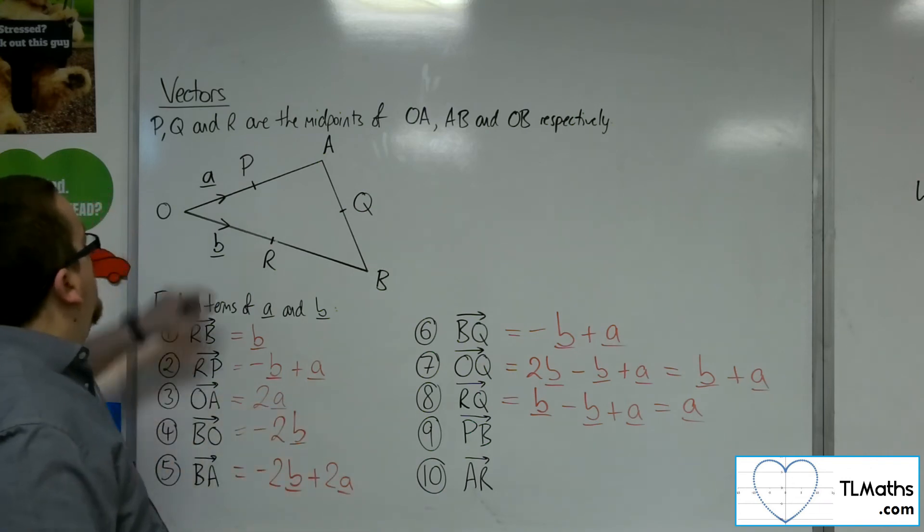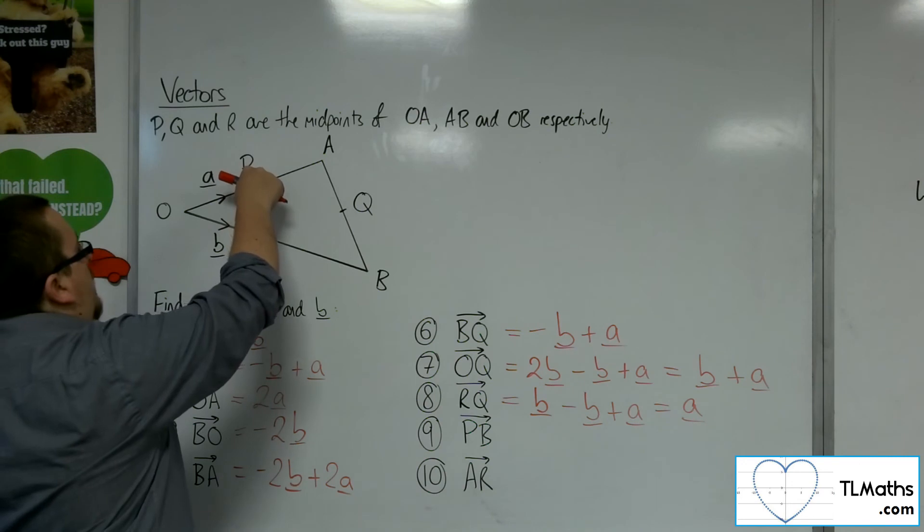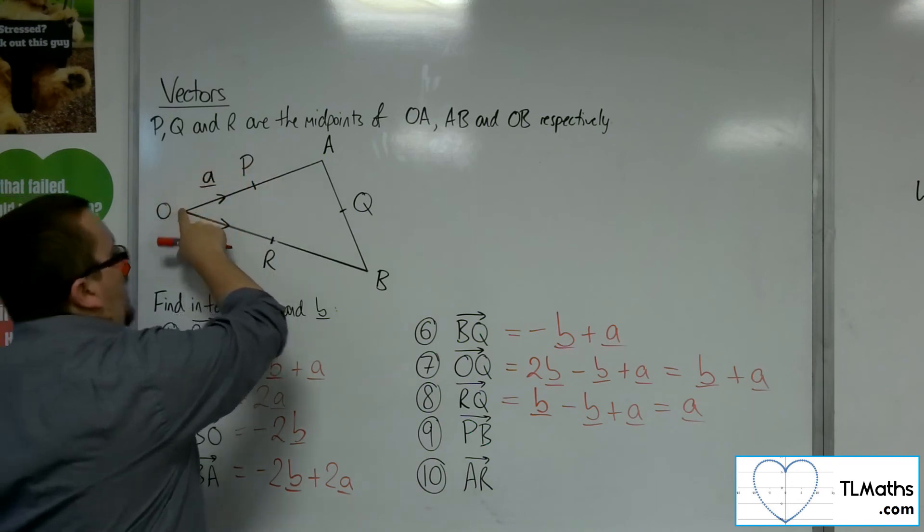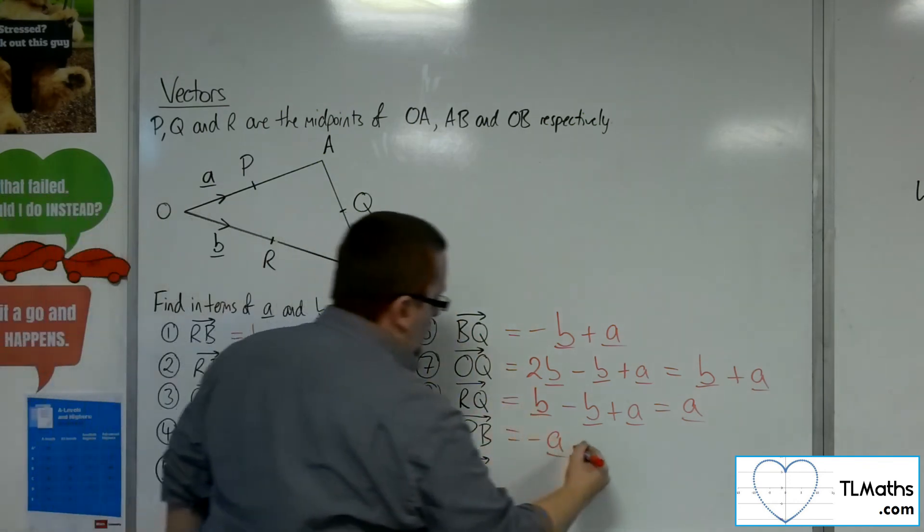P to B. P to B. Now from P, I can backtrack along to O, so that's minus A. And then I can go 2B and I'll get to B.